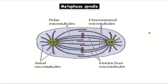There are four types of spindle microtubule: kinetochore microtubule, chromosomal microtubule, polar microtubule, and astral microtubule. The chromosomal microtubule attaches to the chromosome, while the kinetochore microtubule attaches specifically to the kinetochore region.